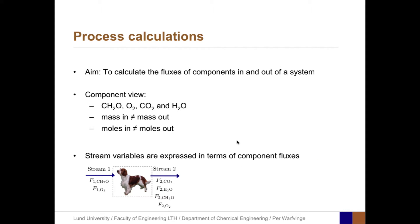The aim of process calculations is to calculate the fluxes of components in and out of systems. Here we will apply the component view, considering CH2O, O2, CO2, and H2O. We should note that mass in does not equal mass out, and the number of moles in does not equal the number of moles out. The stream variables are expressed in terms of component fluxes. In the input stream, stream 1, we have two molar fluxes, each represented as stream variables F1CH2O and F1O2.